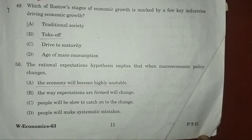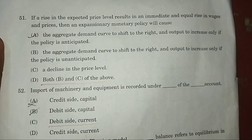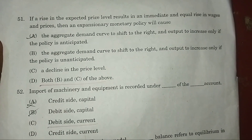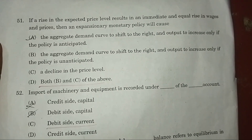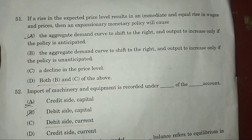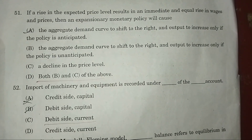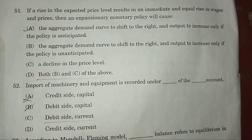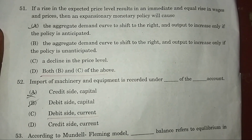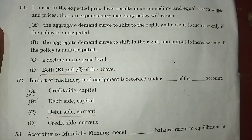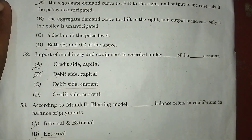Question 51: If a rise in the expected price level results in an immediate and equal rise in wages and prices, then expansionary monetary policy will cause — answer: D — both B and C.